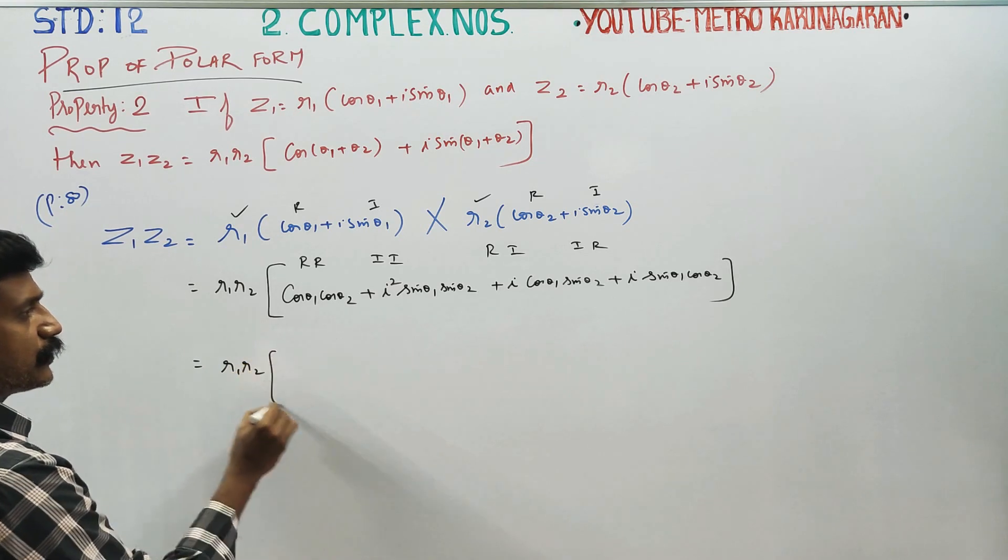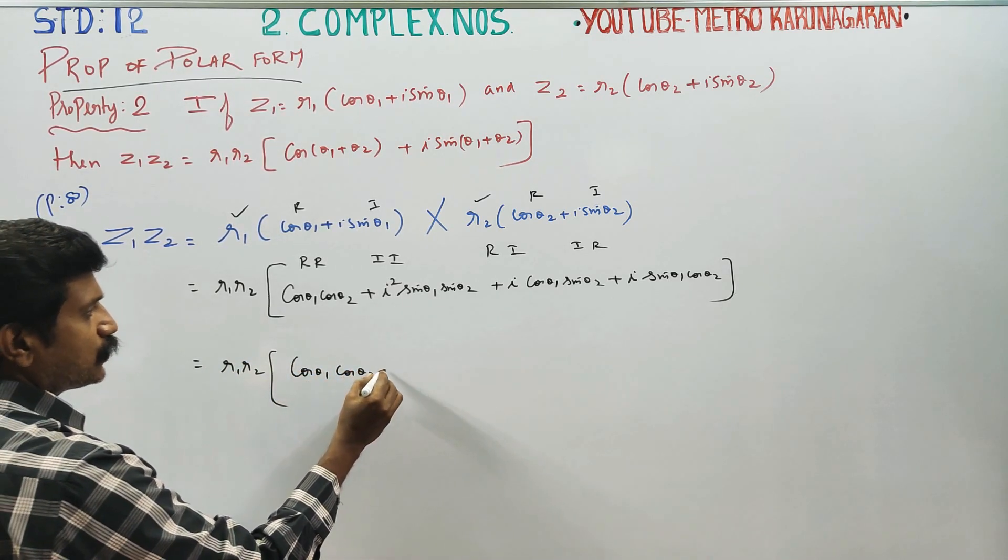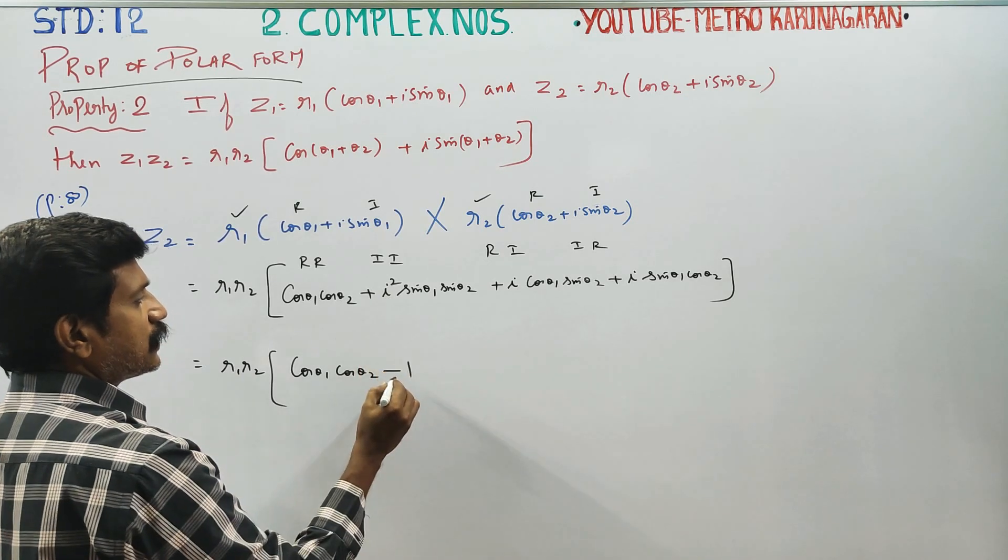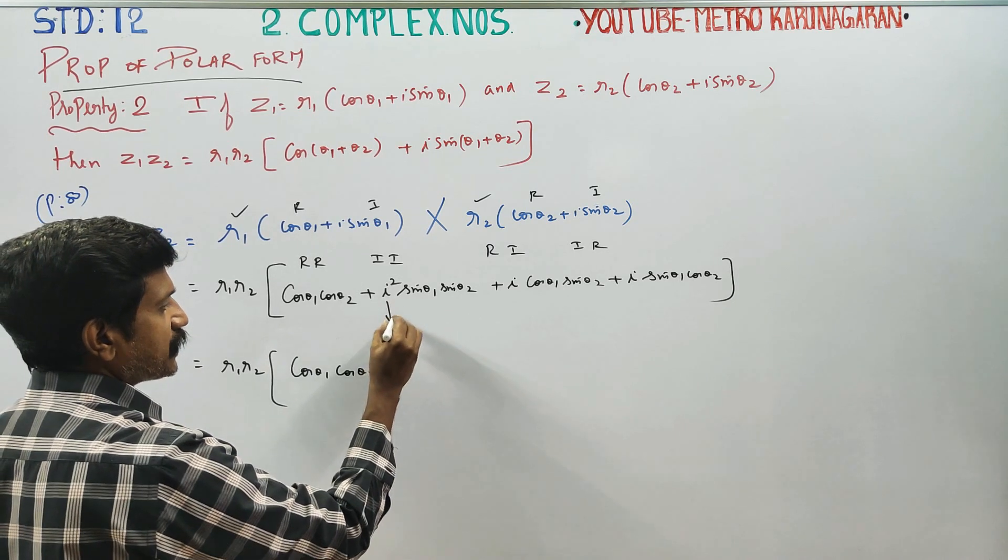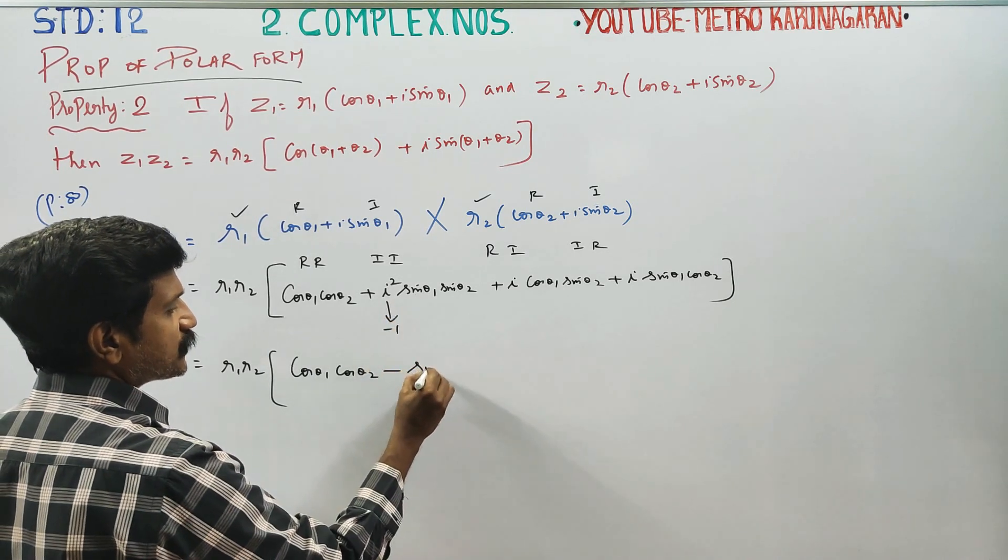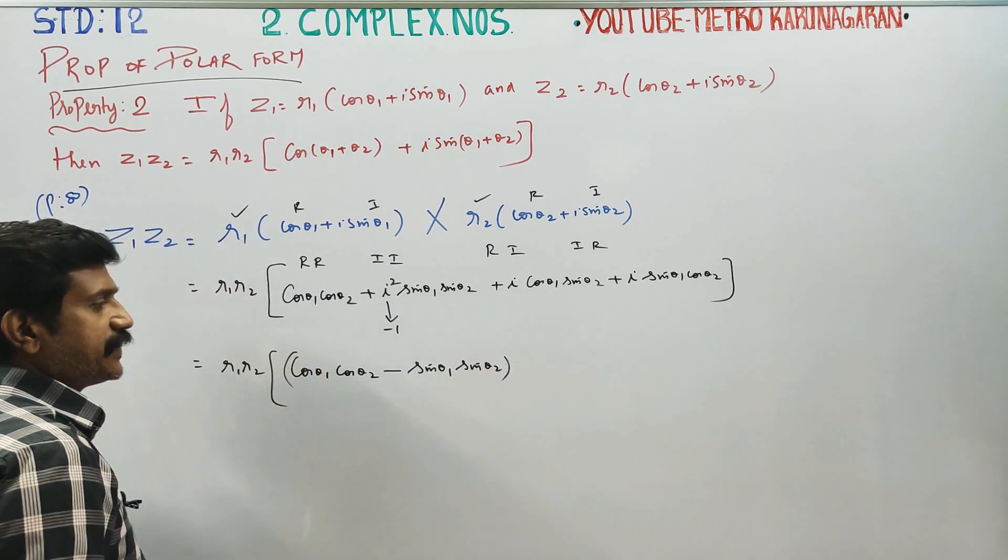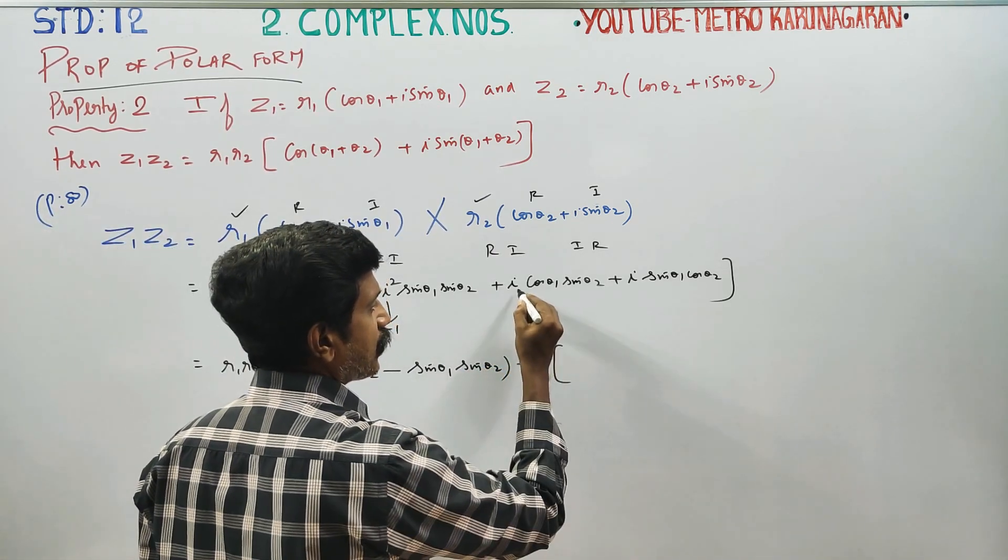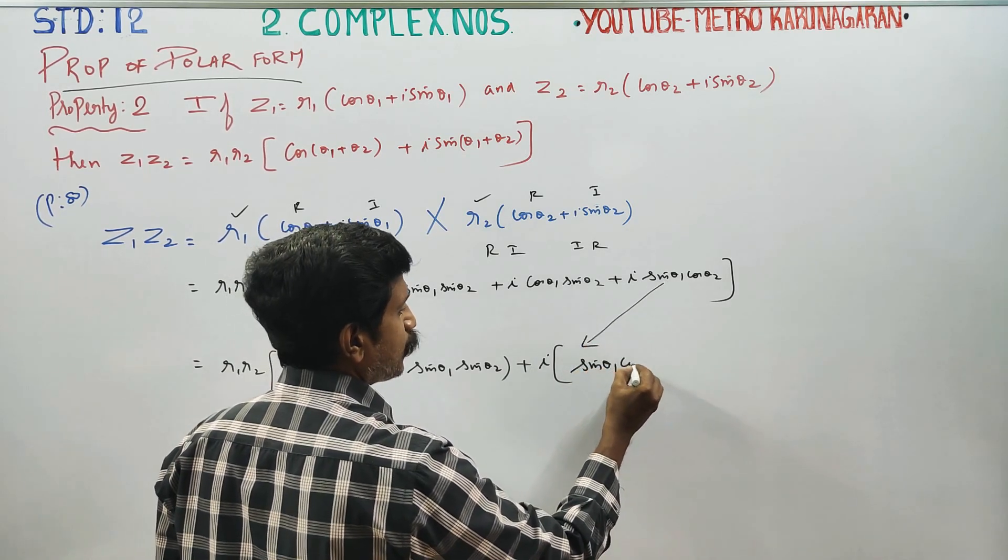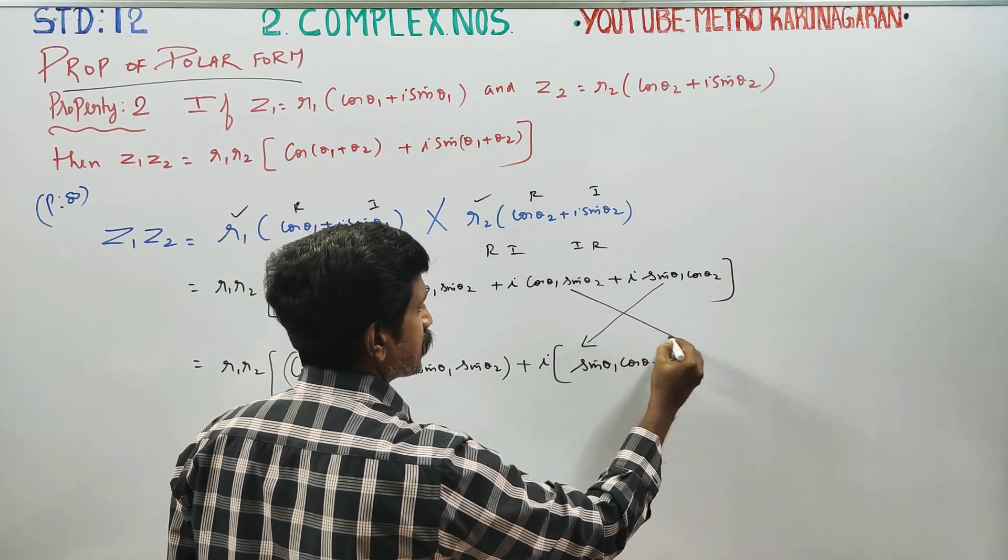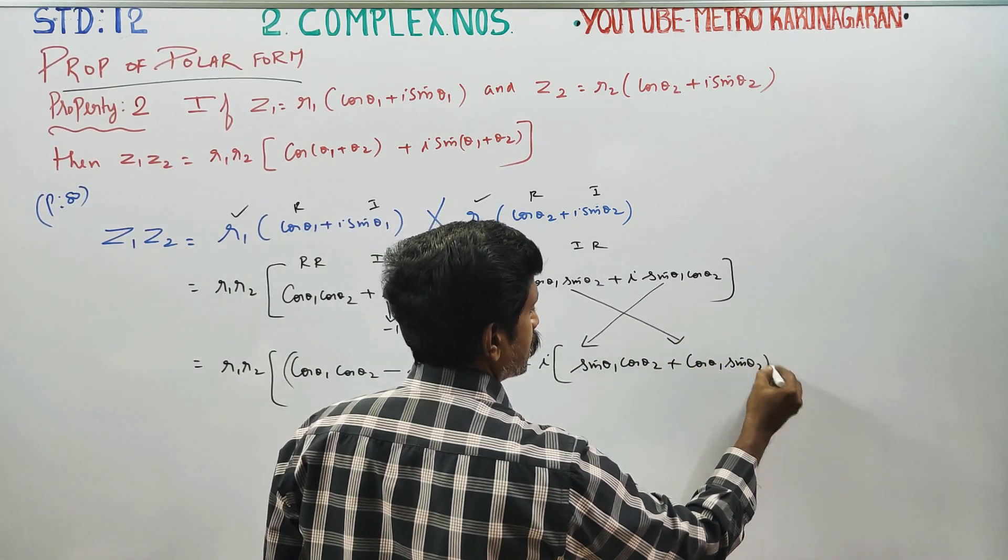R1 R2, cos θ1 cos θ2, i² is minus 1, so minus sin θ1 sin θ2 for the real part. Take i common from the imaginary terms: sin θ1 cos θ2 plus cos θ1 sin θ2.